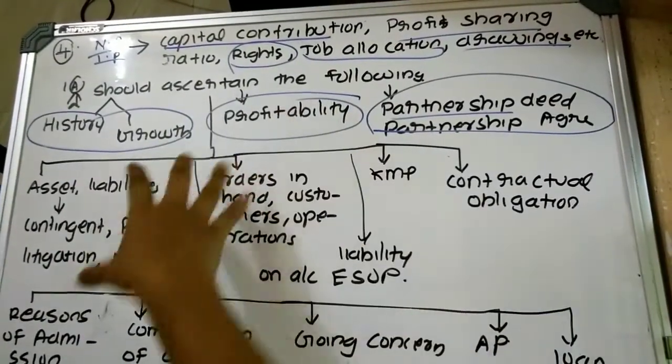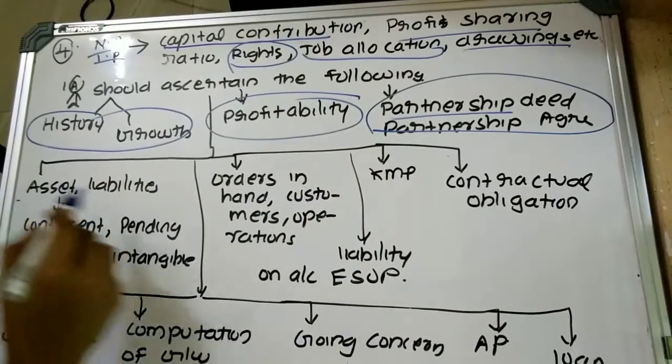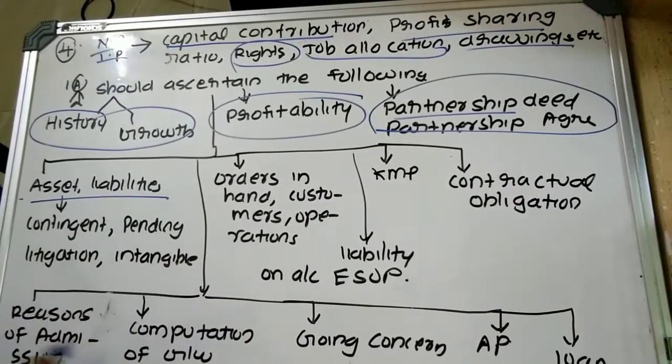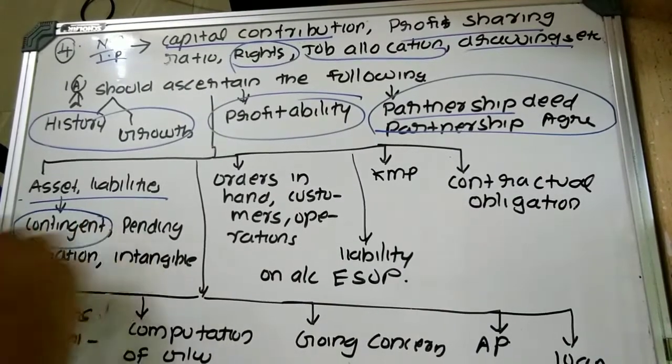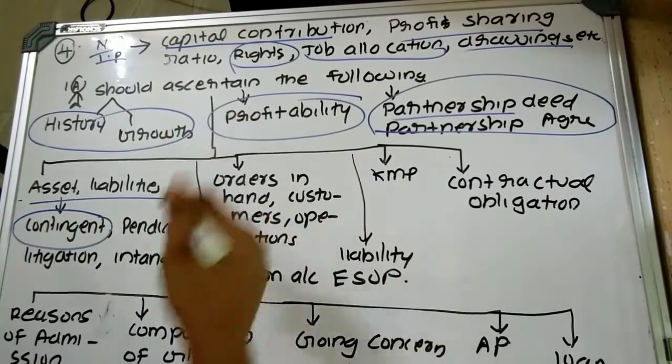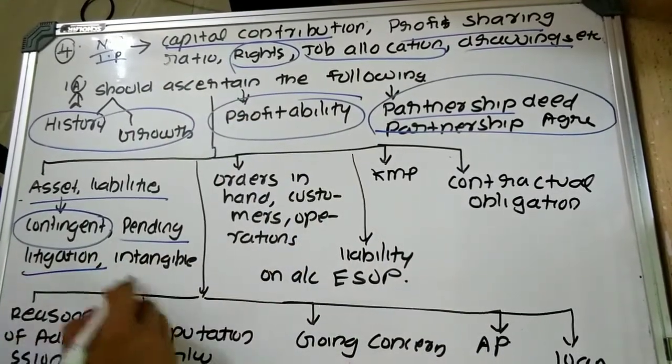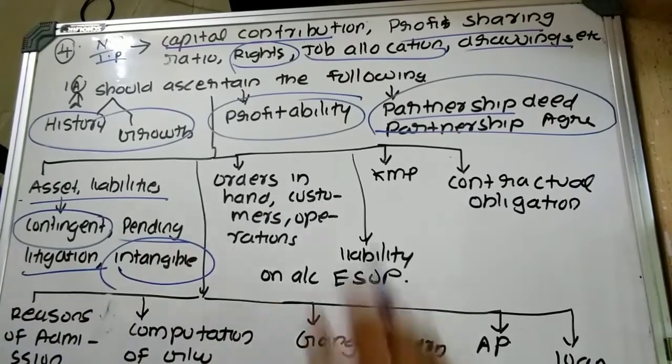The investigating accountant is also required to obtain an understanding of assets and liabilities of the concerned partnership firm—whether there exists any contingent liability, whether it has been properly disclosed, pending litigations, and the value of intangibles.